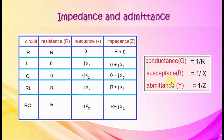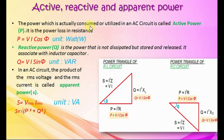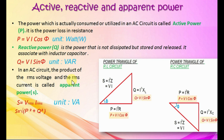Active, reactive, and apparent power. Active power P is actually consumed in an AC circuit — it is power loss in resistance. P equals VI cos phi. Unit is watt. Reactive power Q is stored and released by inductors and capacitors. Q equals VI sin phi. Unit is VAR. Apparent power S is the product of RMS voltage and RMS current. Unit is VA. S equals root of (P squared plus Q squared). Power factor of an AC system is the ratio of real power to apparent power, also R by Z.